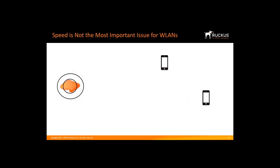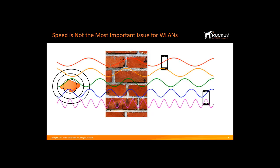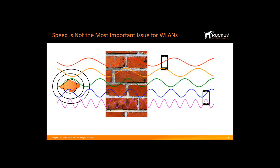Better speed is not the most important issue. The maximum speeds are notoriously inaccurate in the real world. Performance can vary widely based on range, obstacles, other signals in the air, multi-path reflections, and the quality of your access point and your client device. To address these issues, 11ax aims to improve efficiency in a number of ways to give you consistently higher real-world speeds than what you would get with 11ac.